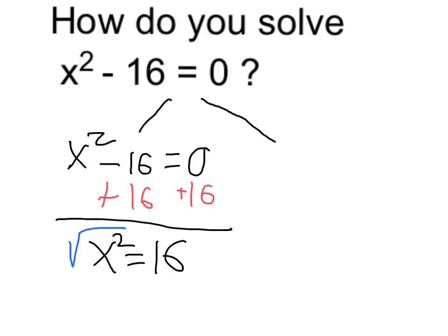And if I take the square root of both sides, then I get that x is equal to plus or minus 4. We need to make sure we include that negative 4 because negative 4 times negative 4 is equal to 16, just as much as positive 4.